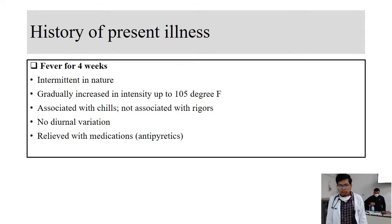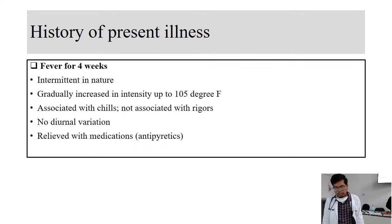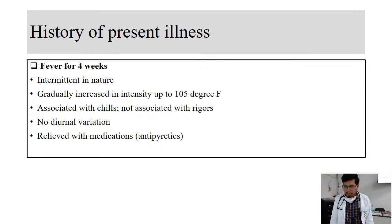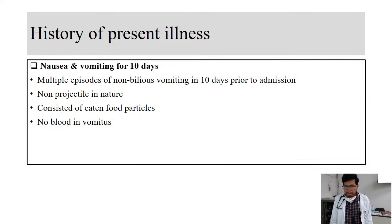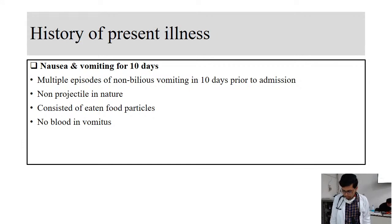The fever he had for the last four weeks was basically intermittent in nature, and the intensity gradually increased up to 105 degrees Fahrenheit. The fever episodes were associated with chills, and there was no particular diurnal variation in the fever pattern. There was some symptomatic improvement with antibiotic medications. Along with the fever, he had multiple episodes of non-bilious, non-projectile vomiting; the vomitus consisted of eaten food particles with no blood.